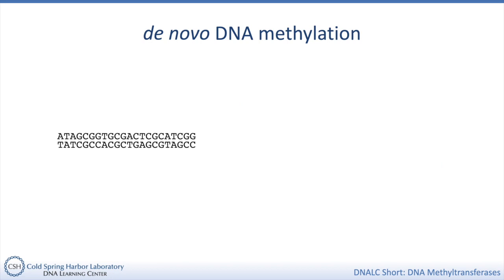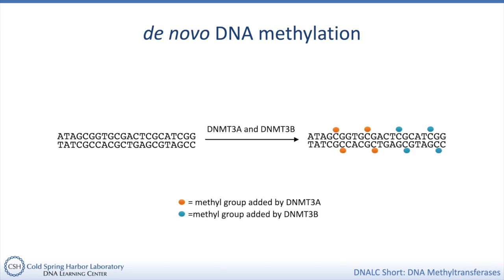Now we're talking about de novo DNA methyltransferases. As their name suggests, they set up a new pattern of methylation. There are two active de novo DNA methyltransferases in mammals: DNMT3A and DNMT3B. Scientists still don't totally understand how these two enzymes set up the unique patterns of DNA methylation observed in different cells, but we do know that the structure of these proteins gives them the ability to bind to DNA with a preference for CG dinucleotides as part of the bound sequence. The two de novo DNA methyltransferases have some overlapping targets and some targets that are specific to each enzyme.